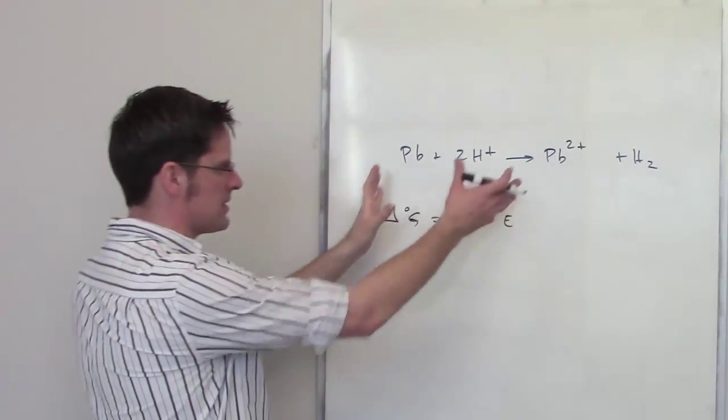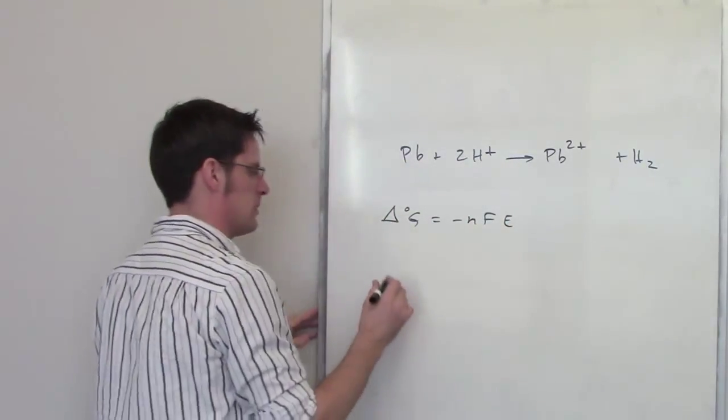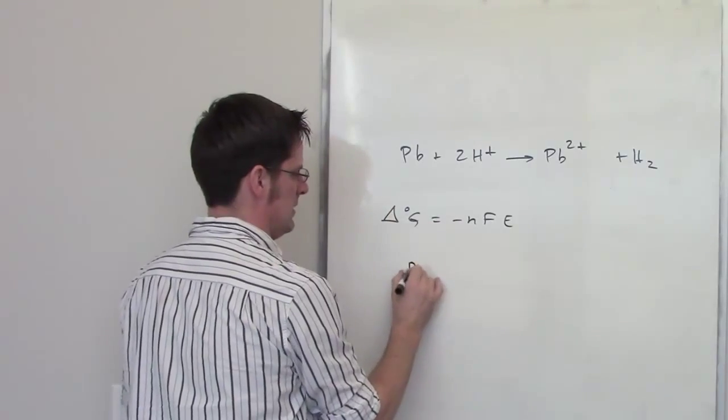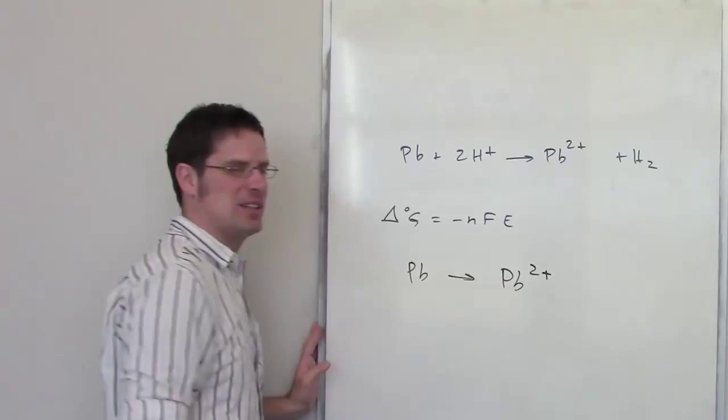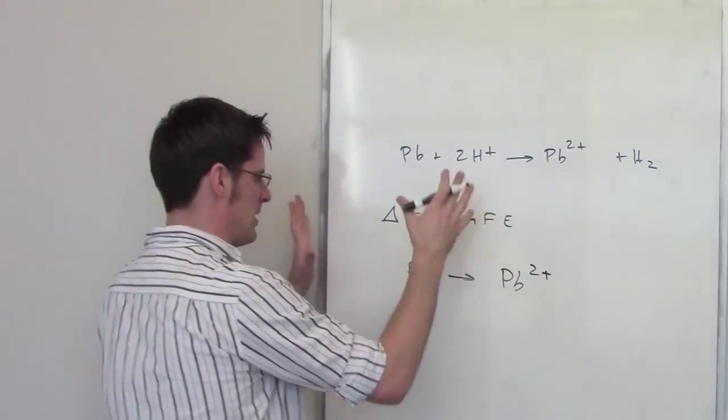So, let's see if we can split this thing apart and determine what's being oxidized, what's being reduced. I've got lead turning magically into—sorry, electrochemically into—lead 2+. That's one step.